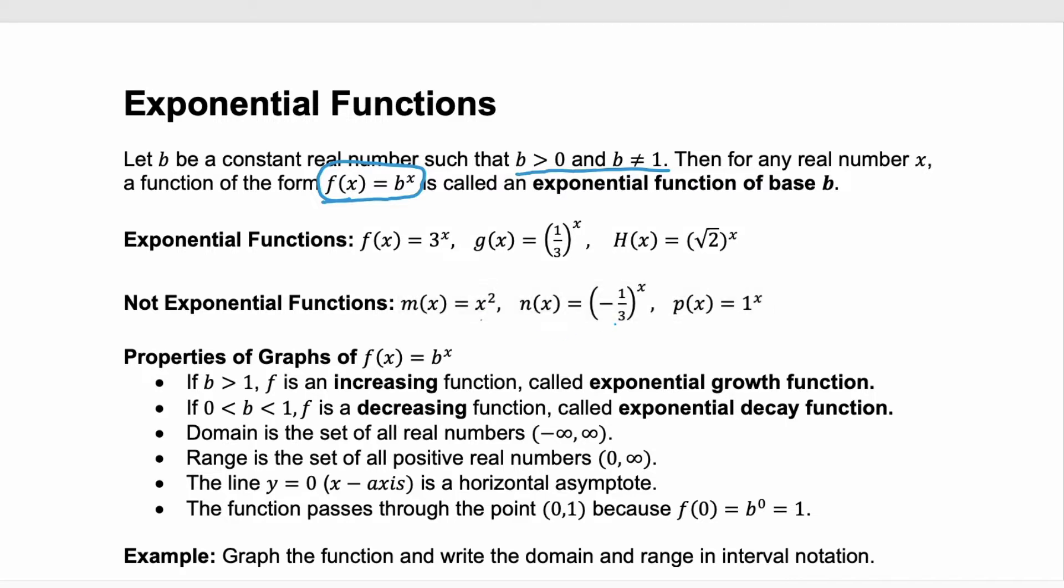n(x)—here the base is negative 1/3, it's negative. Remember, the base b has to be greater than 0. And the last example, 1^x—well, the base is 1. That's another restriction of an exponential function. The base cannot equal 1.